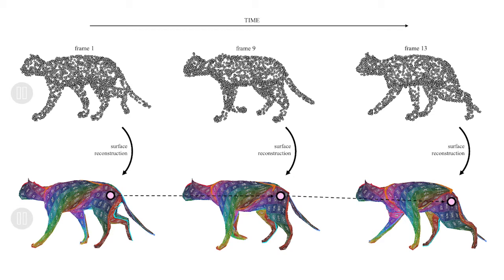Semantically corresponding points match each other across the surfaces. Our method is completely unsupervised and does not use any training data with known correspondences, nor assumes any prior regarding the shape to reconstruct. We found that temporal coherence leads both to better correspondences as well as purely better reconstructions.